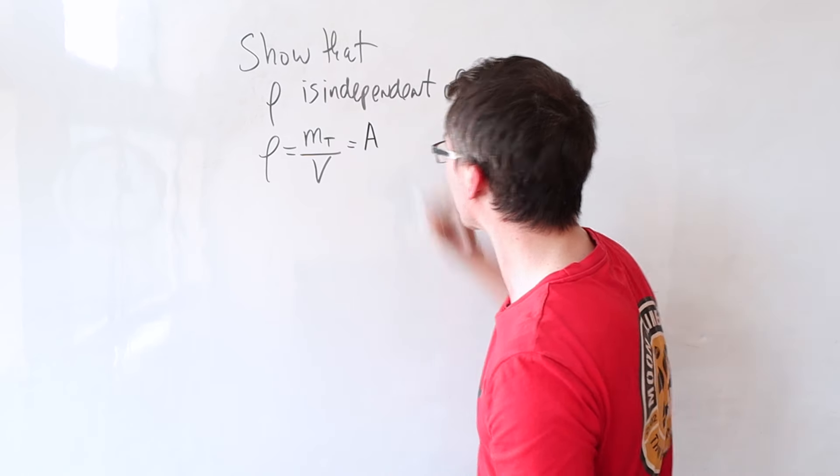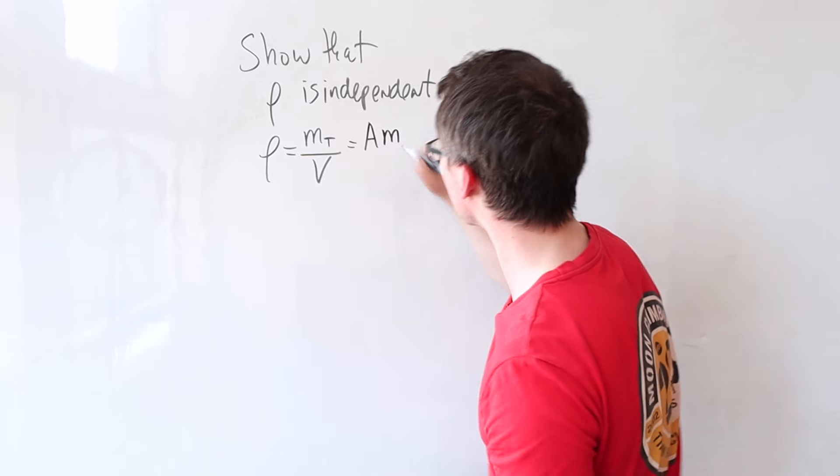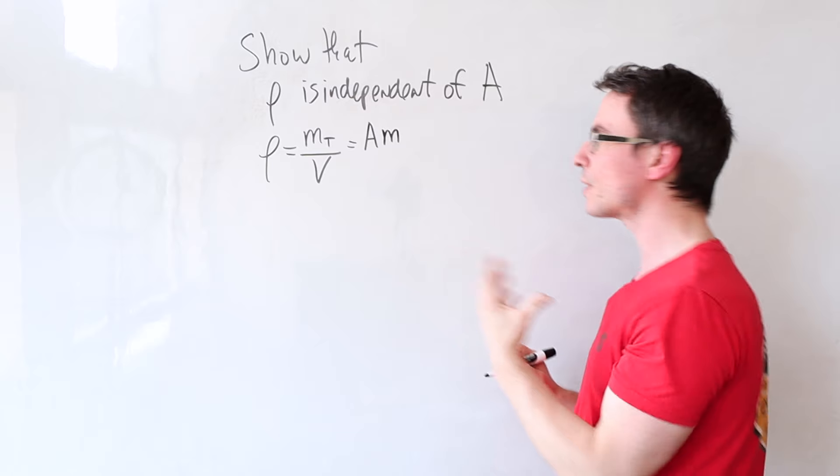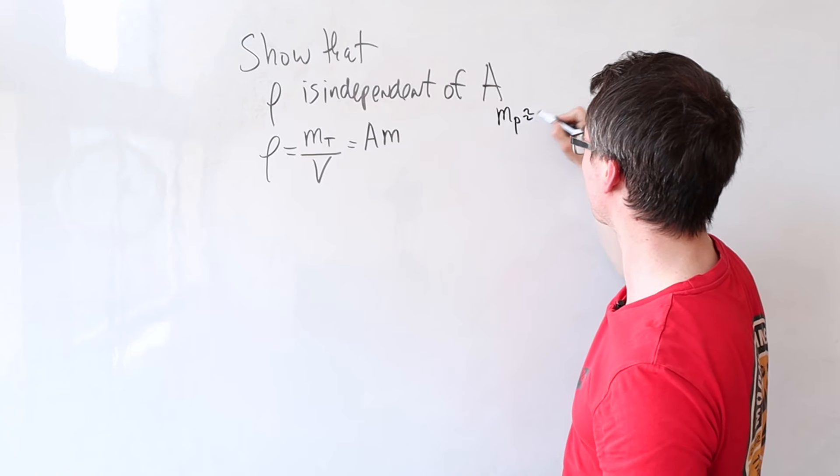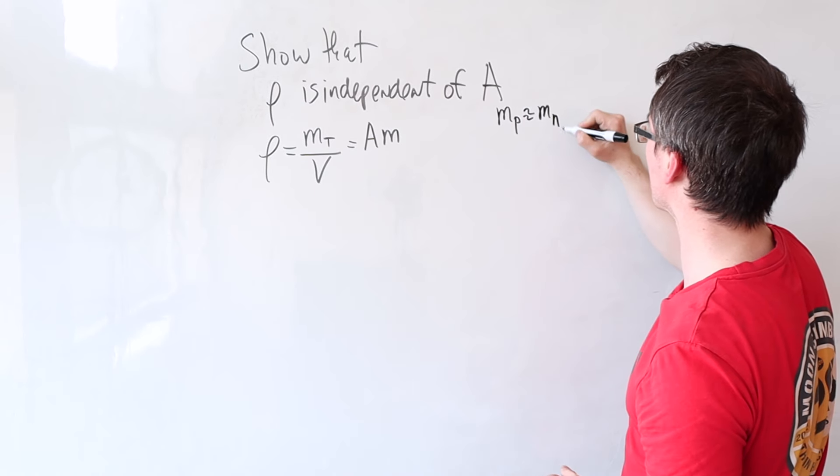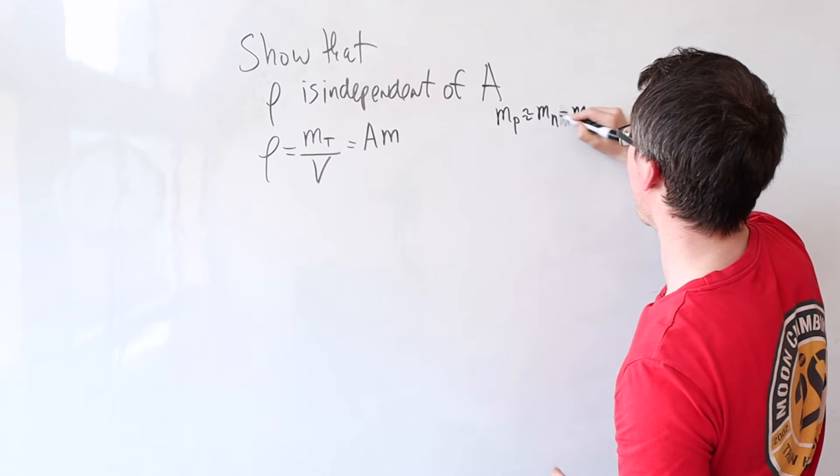If there are A nucleons, this will be equal to A times the mass of each individual nucleon. Please note that this derivation assumes that the mass of a proton is about equal to the mass of a neutron, which in this case I'm just going to call m.